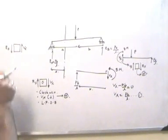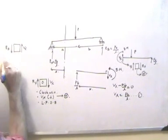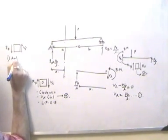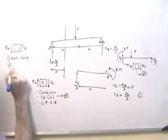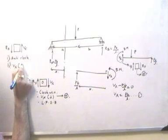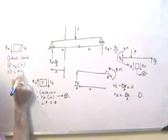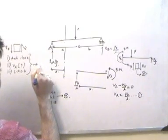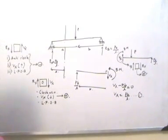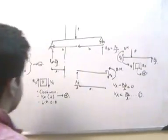This will essentially try to turn the element in an anticlockwise direction. So number one: anticlockwise direction; number two: Vx upwards; and number three: left portion of the beam. If these three are satisfied, then I will say that this is having a negative value of the shear force. This is the sign convention pertaining to the shear force.